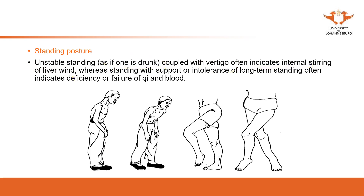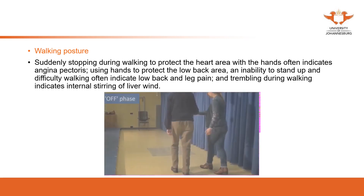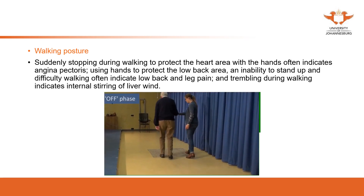Among the five internal evils, the first one we mention is internal wind. There are different causes of wind, but no matter what kind of cause, the result is wind. So when we see moving postures or movements, we think about wind, and then from the wind we think about what the cause behind it is. The next topic is walking posture.